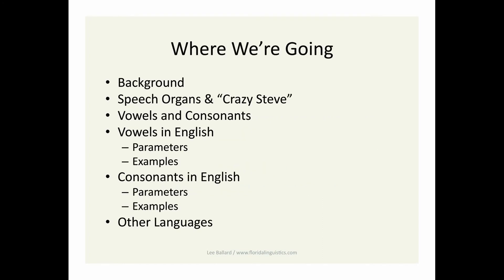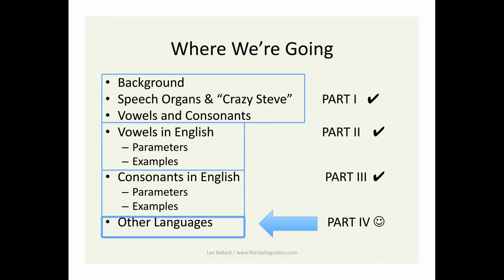This Florida Linguistics Association Intro Guide is a multi-part mini-survey course. Last time we talked about consonants — I gave you examples of the most important consonants in English, how they vary from each other, and I showed you the phonetic symbols from the IPA used to represent them. Before that, we talked about English vowels. Today it's on to part 4, which deals with fun facts from other languages.